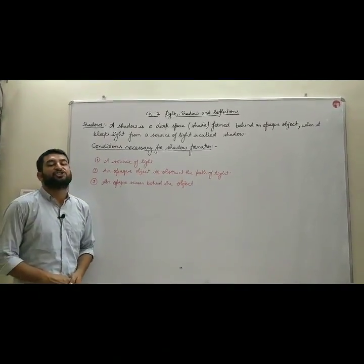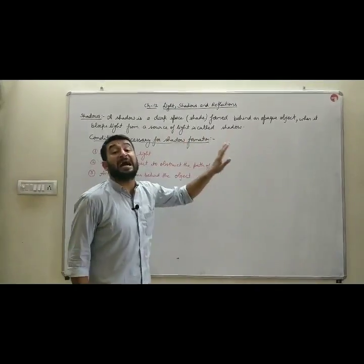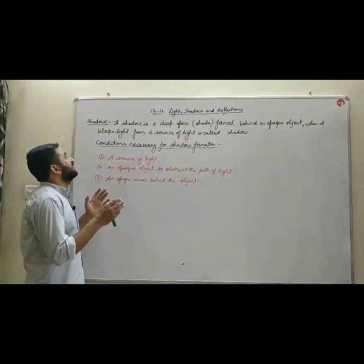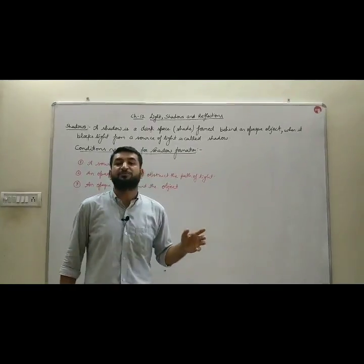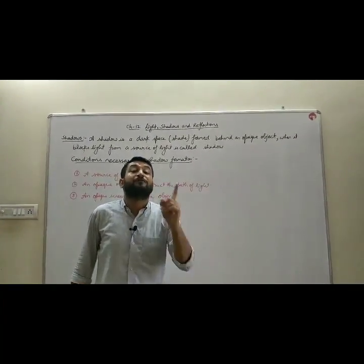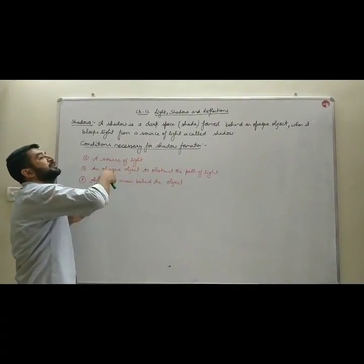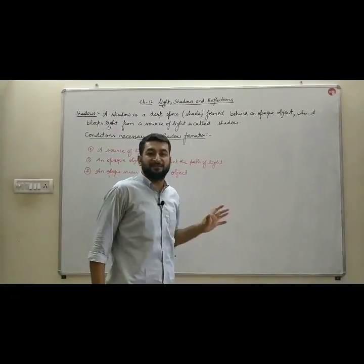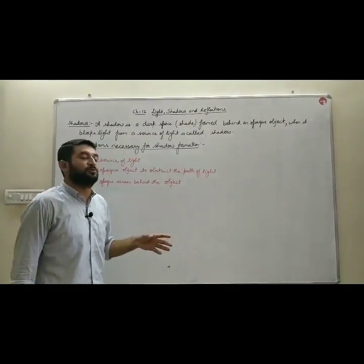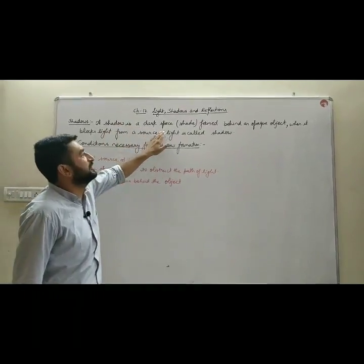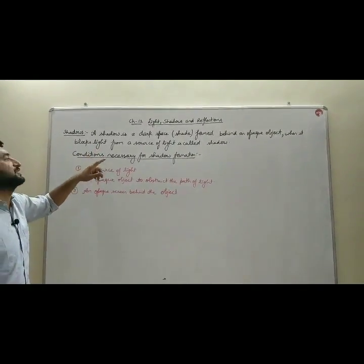Now we will discuss shadows. What is a shadow? It is a dark space or shade formed behind an opaque object when it blocks the light from a source of light — that is known as a shadow. Shadow is basically a dark space formed when an opaque object comes in the path of light and blocks it, so a dark shade is formed behind that object.